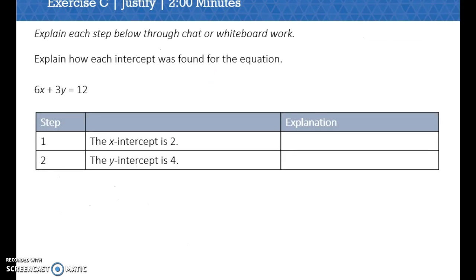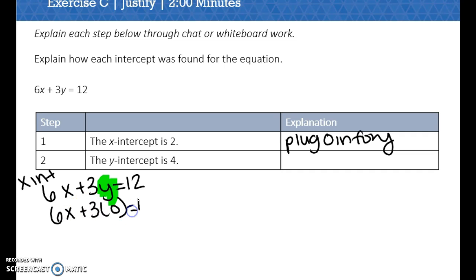It says explain how each intercept was found for the equation. So remember, to find the x-intercept, we plug 0 in for y. So to find the x-intercept, 6x plus 3y equals 12, we're actually going to substitute in 0 for this y. So it becomes 6x plus 3 times 0 equals 12, or 6x equals 12. We need to divide both sides by 6. So my x-intercept is 2.